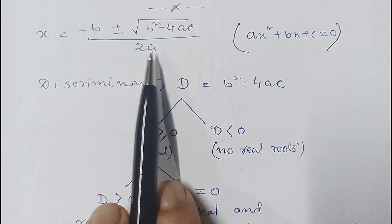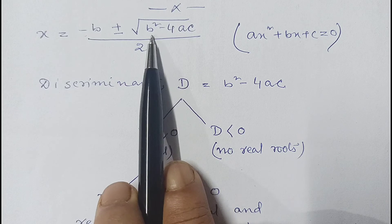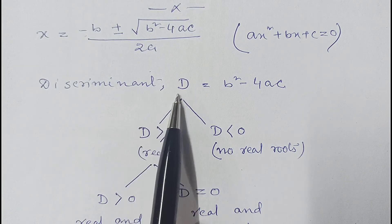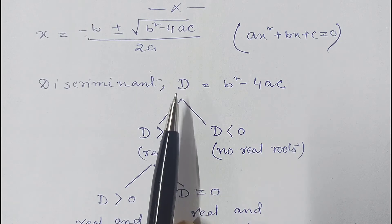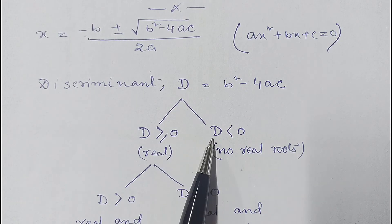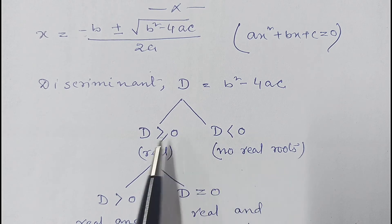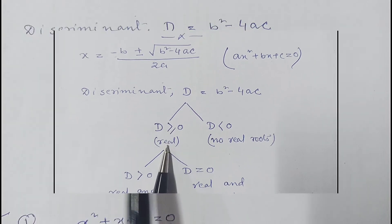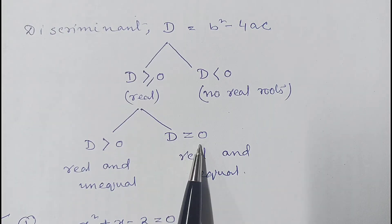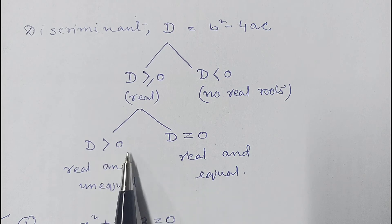In this expression, b² − 4ac is called the discriminant. So discriminant D = b² − 4ac. After calculating the discriminant: if D is less than 0, this shows no real roots exist. If D equals 0 or is greater than 0, roots are real. If D equals 0, roots are real and equal. If D is greater than 0, roots are real and unequal.